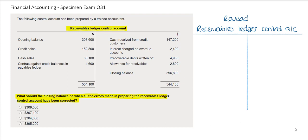Looking at the individual amounts, the first item we have is the opening balance. A Receivables Ledger Control Account should have a debit balance, so this is a correct item and I can put it straight into my T-account. They have also included the credit sales on the debit side. An increase in credit sales would be a debit to my Receivables Ledger Control Account and a credit to income.